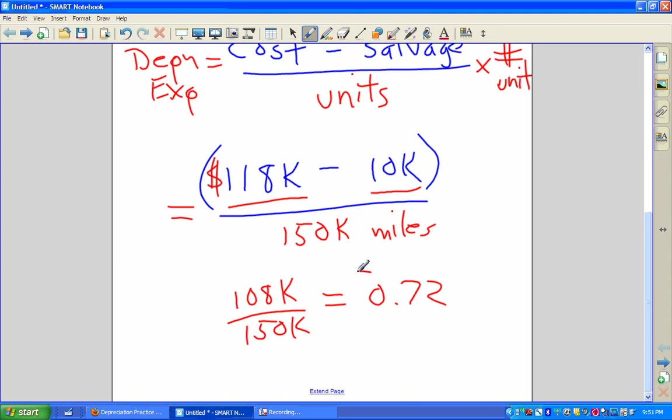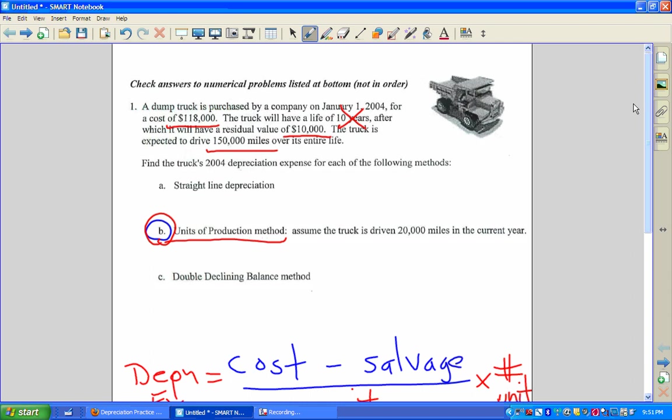And now the next step of units of production is I take this number, and I have to figure out how many miles did I drive that period. They had to give me this. It says 20,000. So I take that number, I multiply by 20,000, and there's your answer.